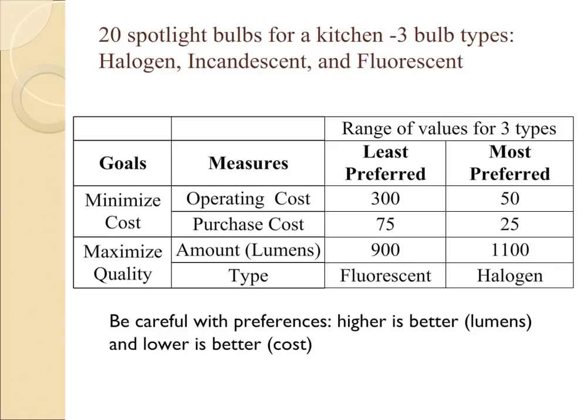The example we're going to use involves 20 spotlight bulbs for a kitchen, and there are three bulb types: halogen, incandescent, and fluorescent. We have two goals: we want to minimize cost and maximize quality.